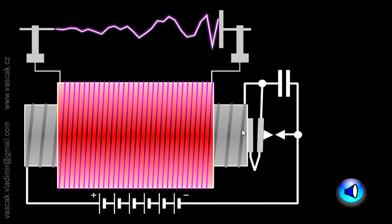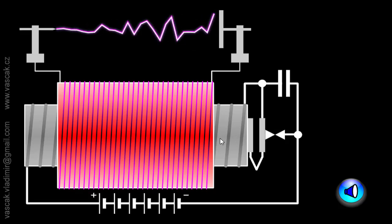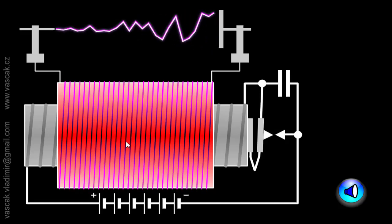Now this changing magnetic field will produce the alternating current in the secondary winding. This induction coil will generate high voltage AC from low voltage DC.